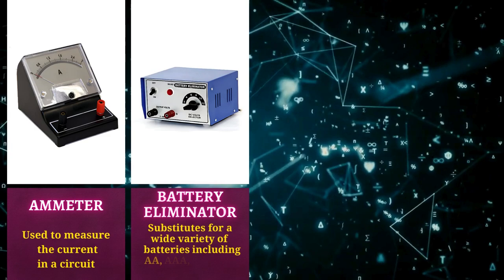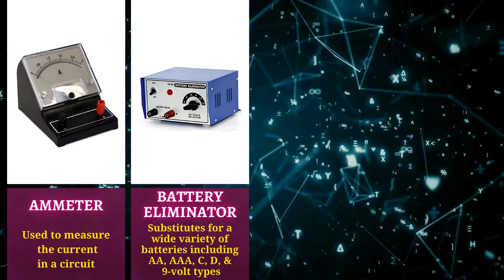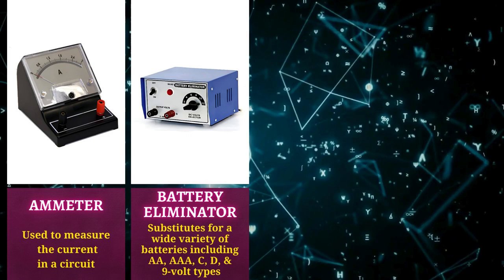Ammeter is used to measure the current in a circuit. Battery eliminator is used as a substitute for a wide variety of batteries including A, AAA, C, D, and 9-volt types.